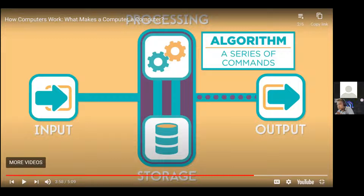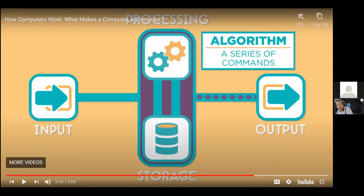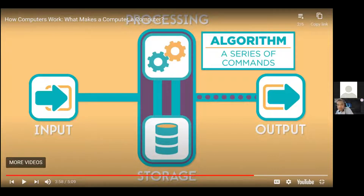The movie shows computers receiving inputs from various sources. After receiving all the data from inputs, the computer works to process all the inputs using the CPU and storage parts. The computer processes data from inputs by using algorithms — an algorithm is a series of commands to solve problems. The algorithm works using the CPU and memory or storage parts.